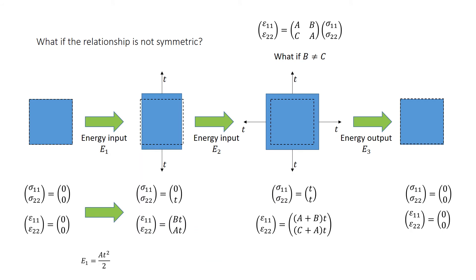We are now going to apply this to each change in stage, moving from stage 1 to stage 2. Sigma2, which is the vertical stress, changes from 0 to t, while epsilon22 changes from 0 to at. When we apply the equations listed in the previous slide, we get an energy input of at squared over 2.